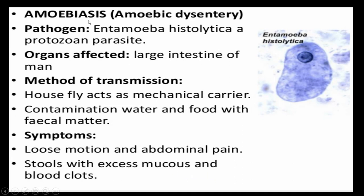The second disease is amoebiasis, caused by the pathogen Entamoeba histolytica. Amoebiasis is also known as amoebic dysentery. The organ affected is the large intestine. The housefly acts as a vector, contaminating water and food with fecal matter, which then gains entry into the human body. Symptoms include loose motion, abdominal pain, and stools with excess mucus and blood clots.